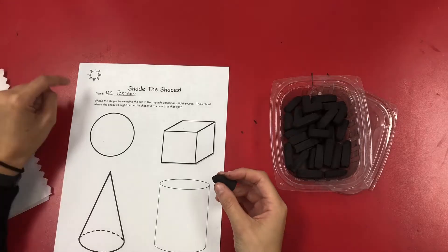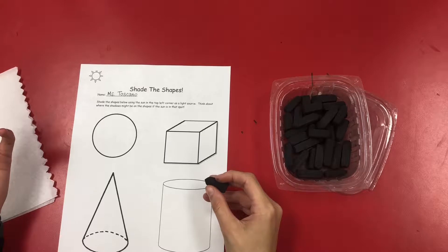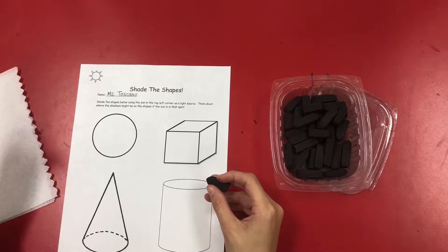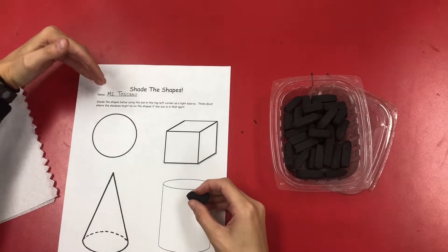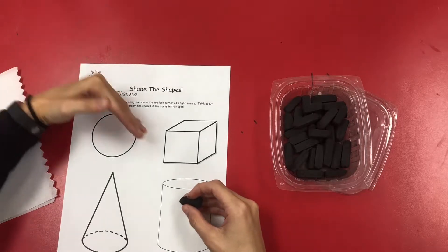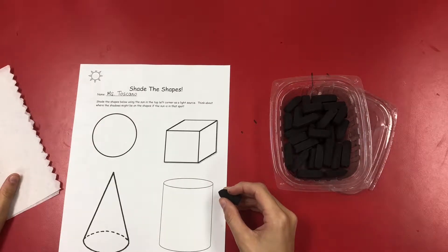You're going to notice there's a little sun in the top left-hand corner. That is going to be your light source, and that's going to tell you where your shadows and highlights are going to be. You're going to pretend that the sun is casting light onto these shapes, so you have to think about where the light is and where the shadows are going to be.